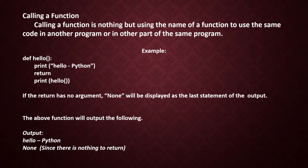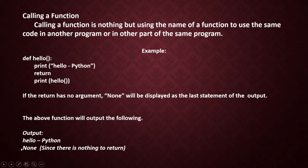The output of that statement is: hello python, None, None. Why does None appear? Since there is nothing to return — when the return value is zero or the return statement has no arguments — None will be displayed as the last statement of the output.